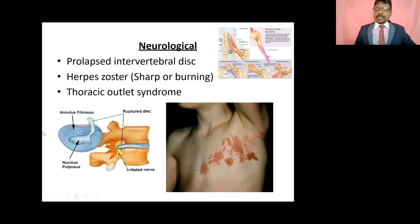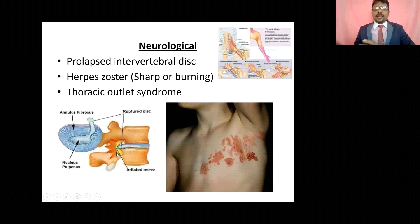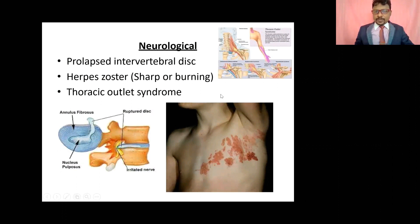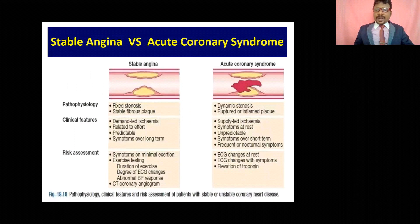Neurological differential: herpes zoster virus produces sharp burning chest pain with rashes and radiating pain. Prolapsed intervertebral disc compresses nerve roots, which can radiate pain to the chest. Thoracic outlet syndrome, where the nerve is compressed between the subclavian muscles, produces chest pain with radiating pain into the upper limbs.